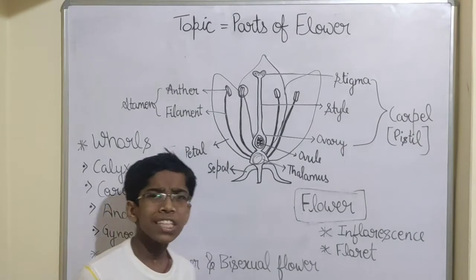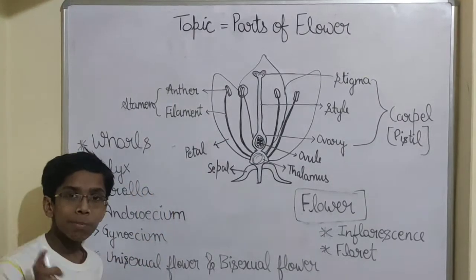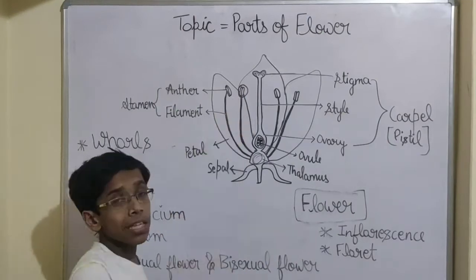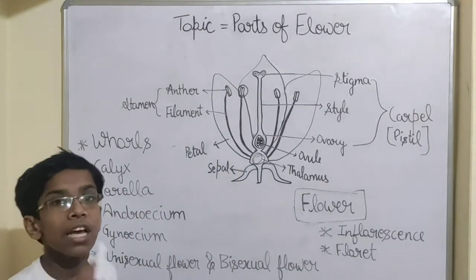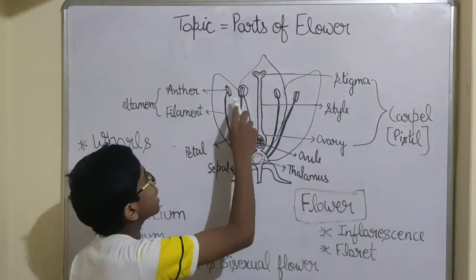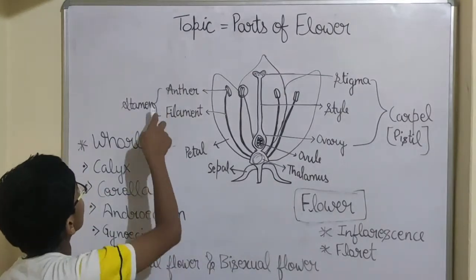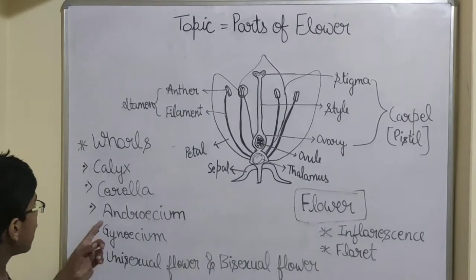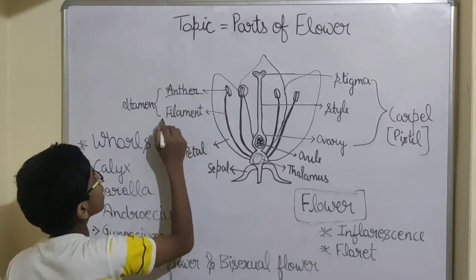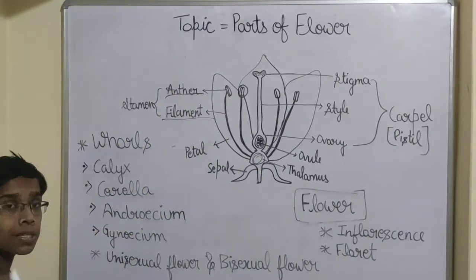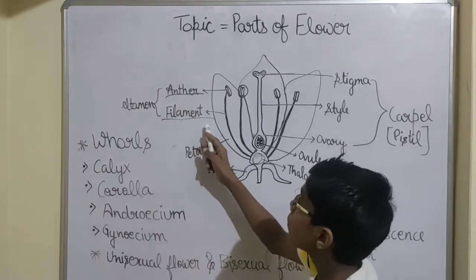The anther has pollen grains which help in reproduction. Pollen grains are a very powdery substance — when you touch or break the anther, the powdery substance will rub off from your fingers. So pollen grains are powdery substance inside the anther. The filament is the tube, and both anther and filament together are in the category of stamen. So androecium consists of stamen, and in the stamen there are anther and filament.